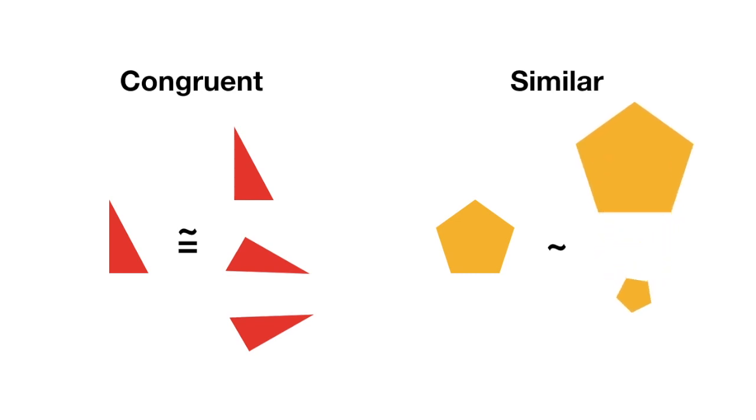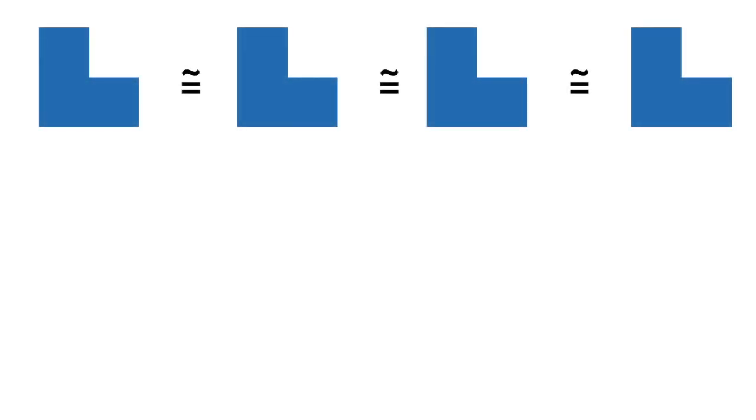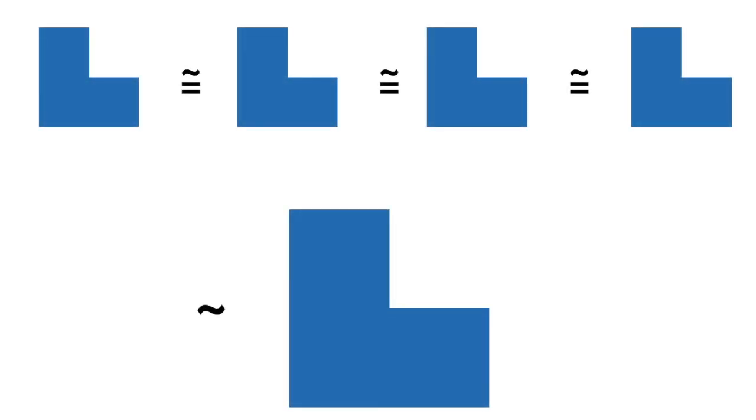So, restated, the components of a reptile need to be congruent to one another, that is, the same size and shape, and similar to their composition.